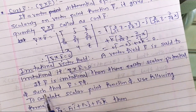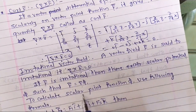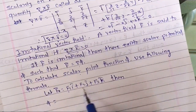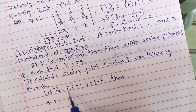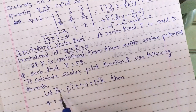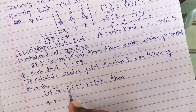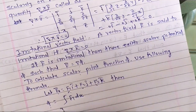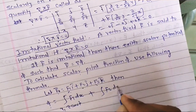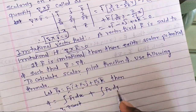If F̄ is irrotational, then there exists a scalar point function phi such that F̄ = del·phi. To find phi, suppose the given vector field is F̄ = F₁ī + F₂j̄ + F₃k̄, where F₁, F₂, F₃ are functions of x, y, z. We use the formula: take the integration of F₁ with respect to x, treating y and z as constants.